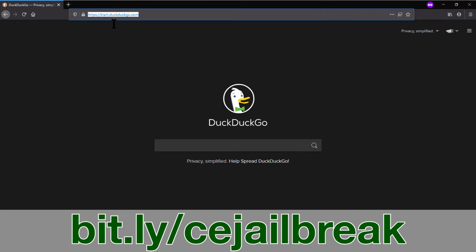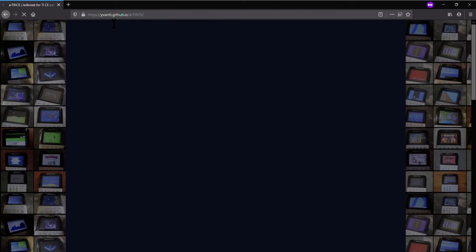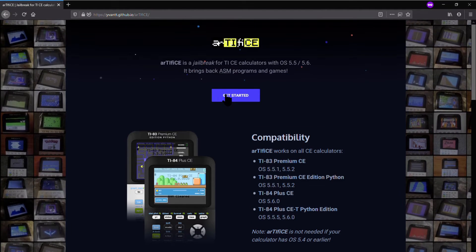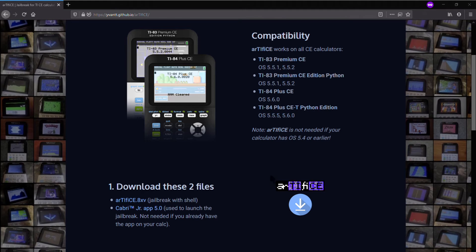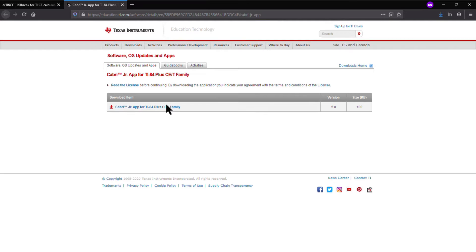Once you have enough space, go to bit.ly/cejailbreak and check that your OS version is supported by the jailbreak. Then scroll down to step 1, the files you need to download. You'll be downloading the official TI Cabri Jr. app along with a save file that contains the jailbreak exploit. You'll need to download both files.